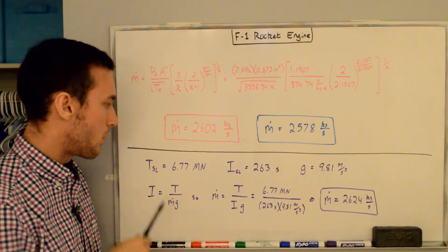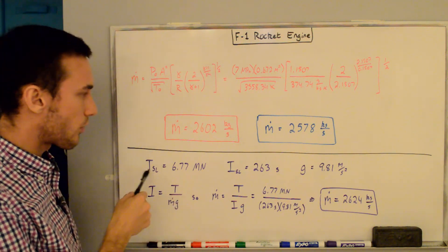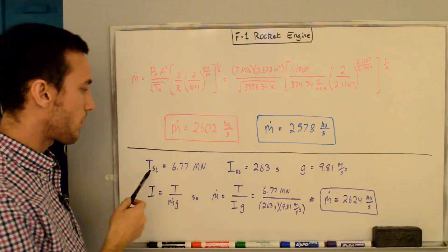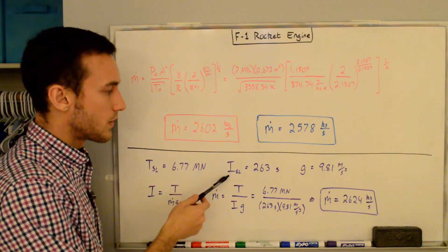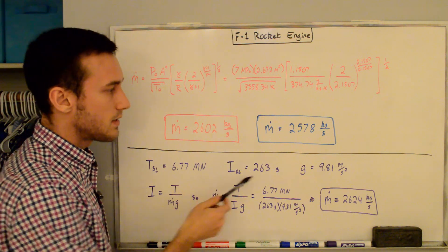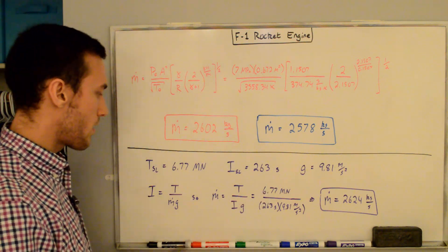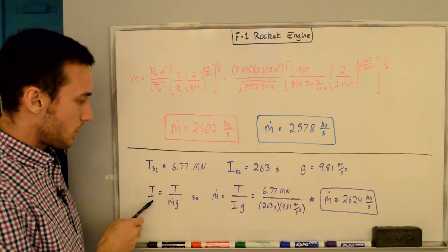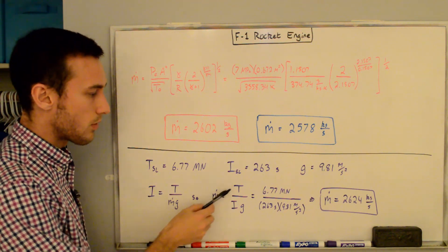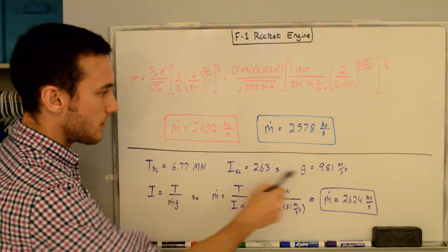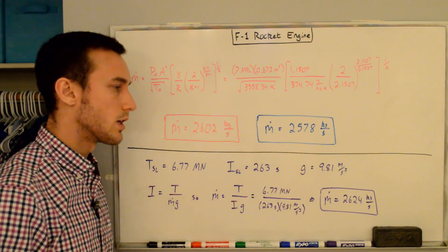Just as a final quick added bonus, we can also compute the mass flow rate through the engine using the thrust and the specific impulse. The thrust listed on the website is 6.77 meganewtons. The specific impulse at sea level is 263 seconds, and the acceleration due to gravity at sea level is 9.81 meters per second squared. The equation is specific impulse equals thrust over M dot G. So if we rearrange for M dot, we get thrust over IG. Plugging in these values gives us a mass flow rate of 2,624 kilograms per second.